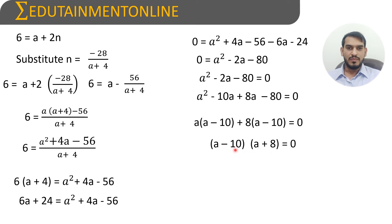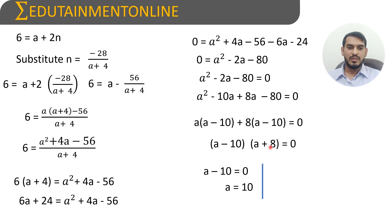Either of these two factors is zero. Taking a minus 10 equals 0 gives a equals 10. Taking a plus 8 equals 0 gives a equals minus 8.